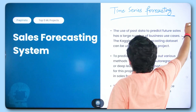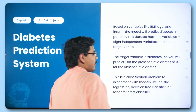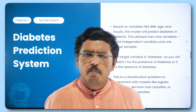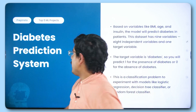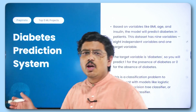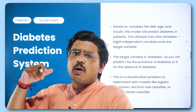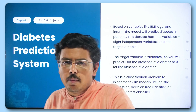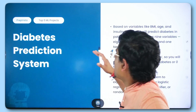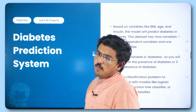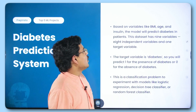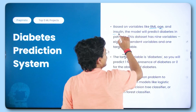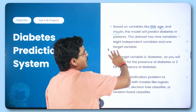Moving ahead, the next topic is from healthcare. You can make a number of prediction systems — for example, a diabetes prediction system, or you can build lung cancer detection, breast cancer detection. A lot of detections using computer vision can be built. For the diabetes prediction system specifically, you take variables like BMI, age, and insulin, and the model will predict diabetes in patients.